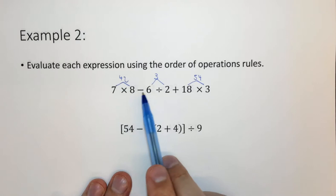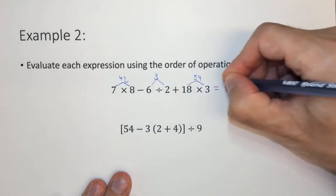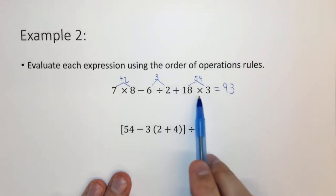Now we want to take 42 minus 3, which is 39, plus 54, which equals 93. So again, we did the multiplying and dividing before we did the adding and subtracting.